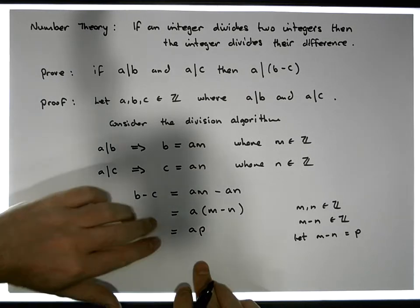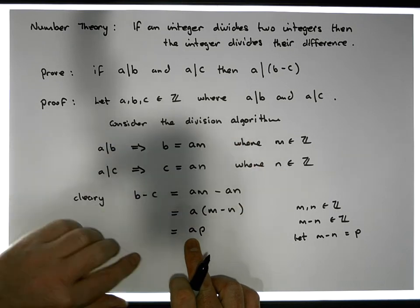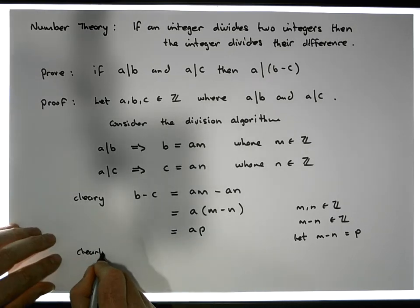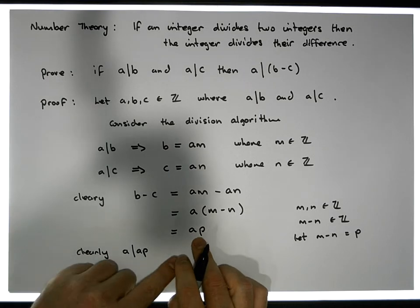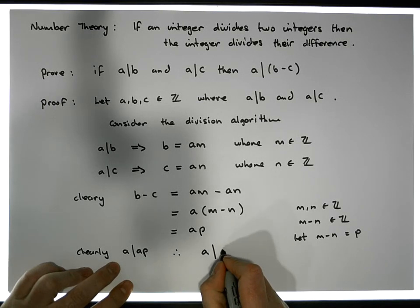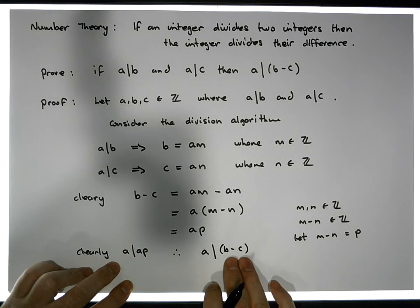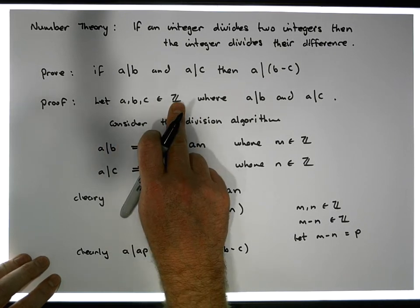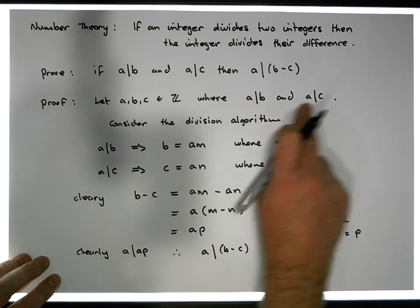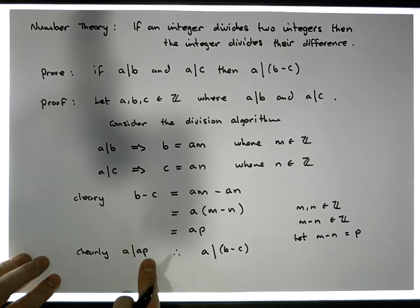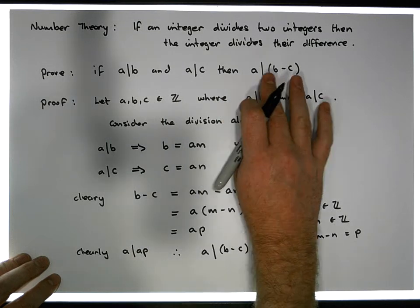So what is this saying to us? Let's look at this AP term. Well, clearly AP is divisible by A. So clearly A divides AP. But AP is actually equal to B minus C. So therefore we have that A must divide B minus C. In other words, A divides the difference of the two integers. Irrespective of the integers that we've chosen, if this property holds that A divides B and A divides C, what we've ended up showing is that the difference between B and C is actually divisible by A. Hence we've shown that given three integers, where one integer divides both of the others, it divides the difference between them.